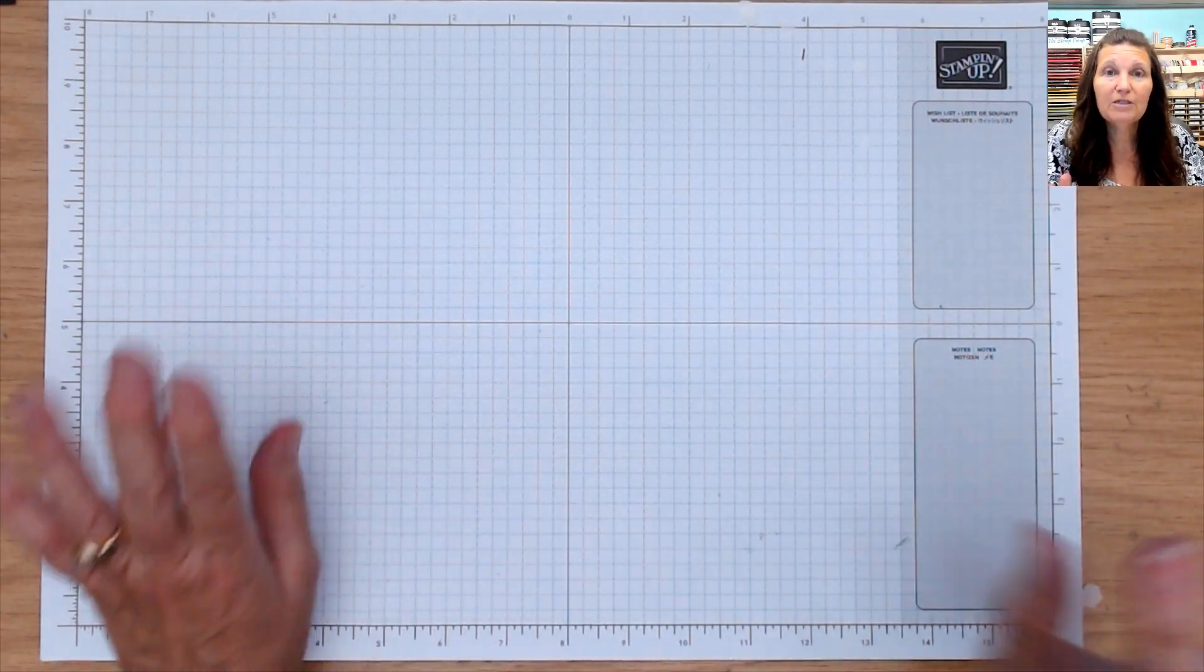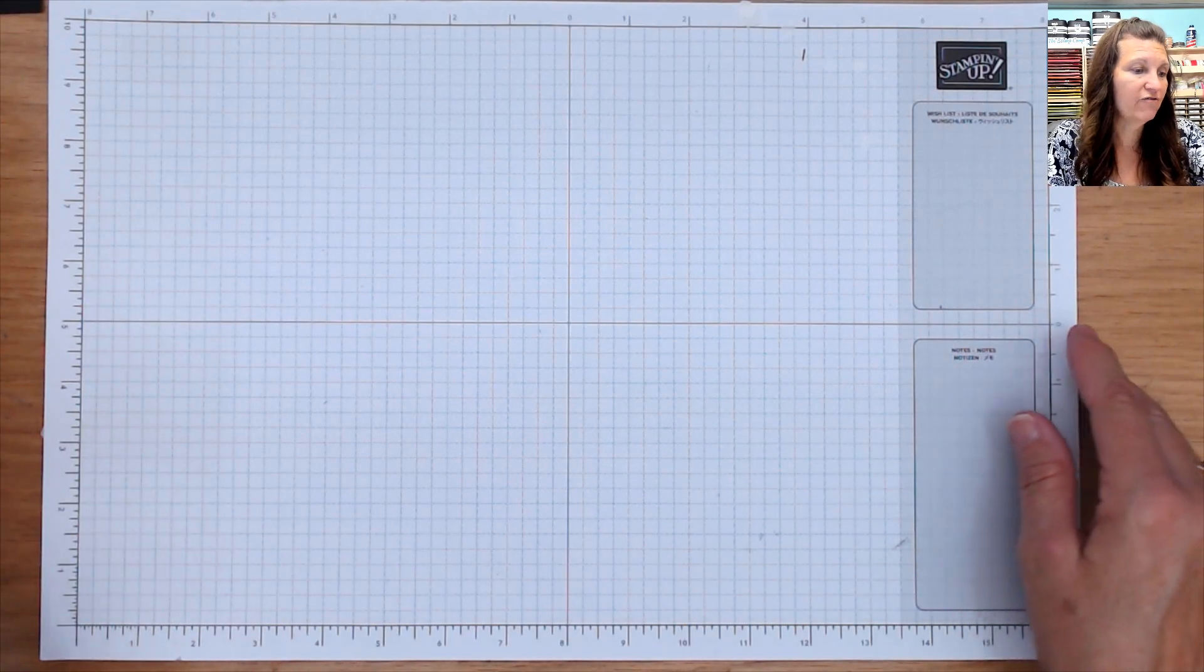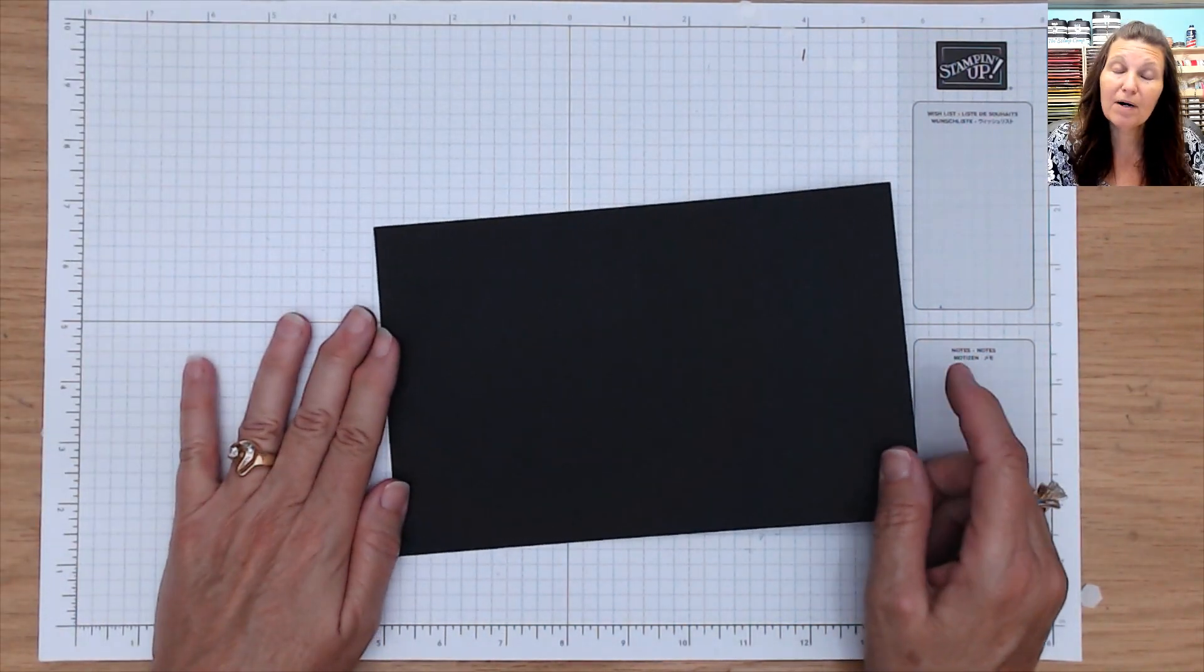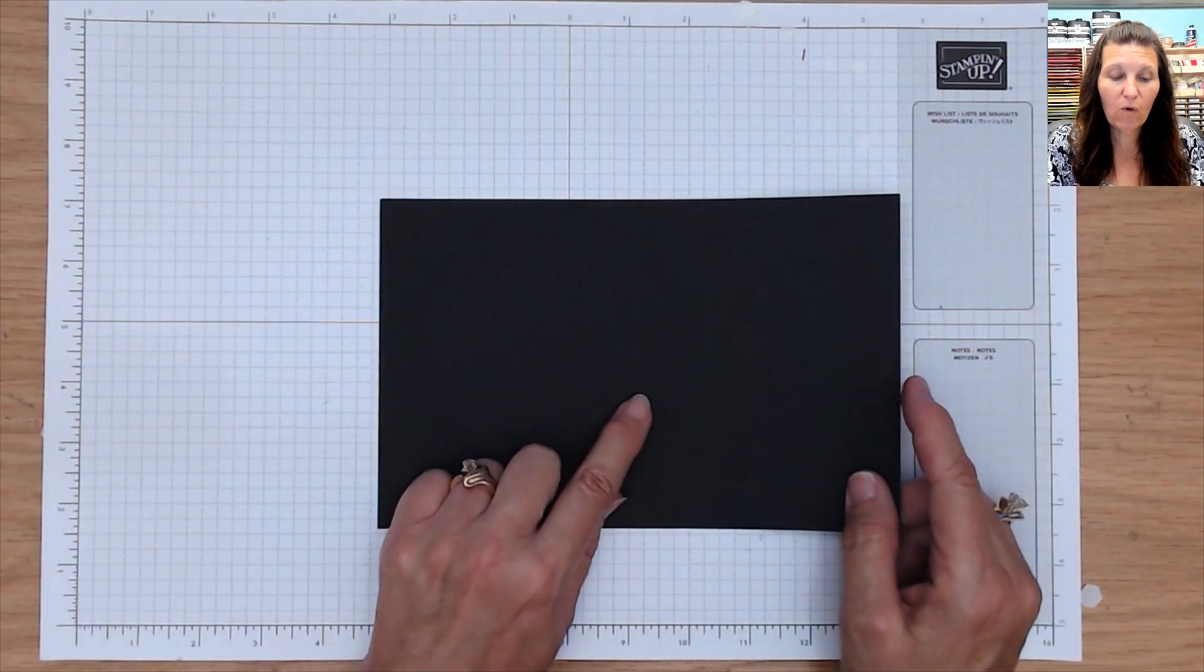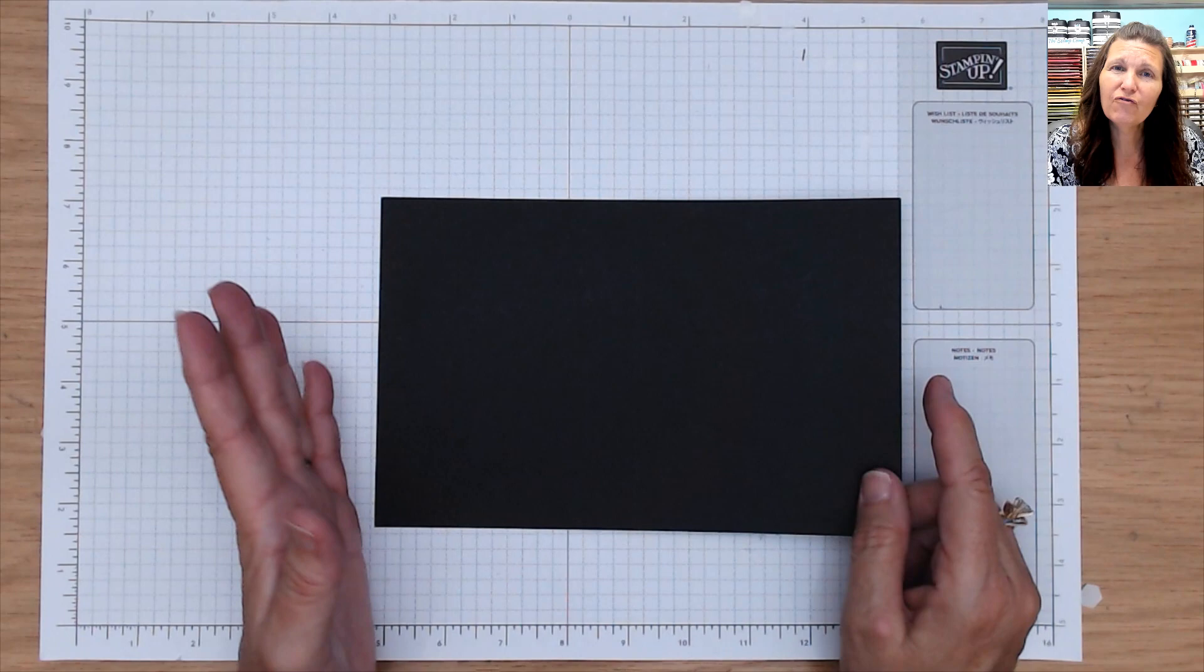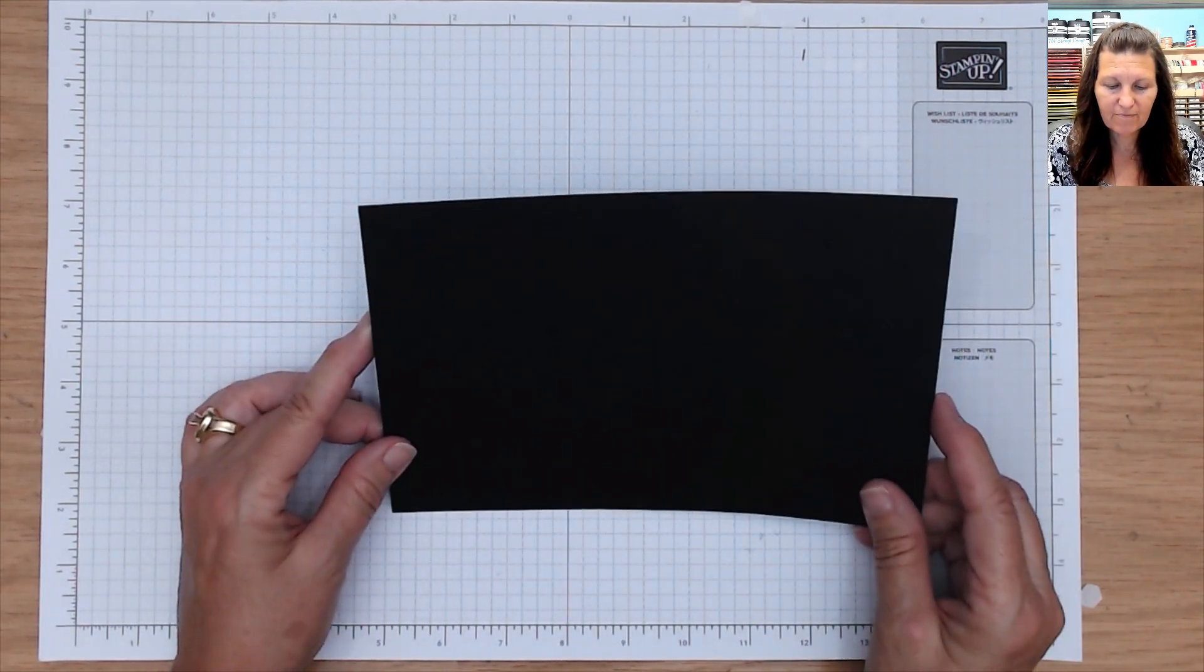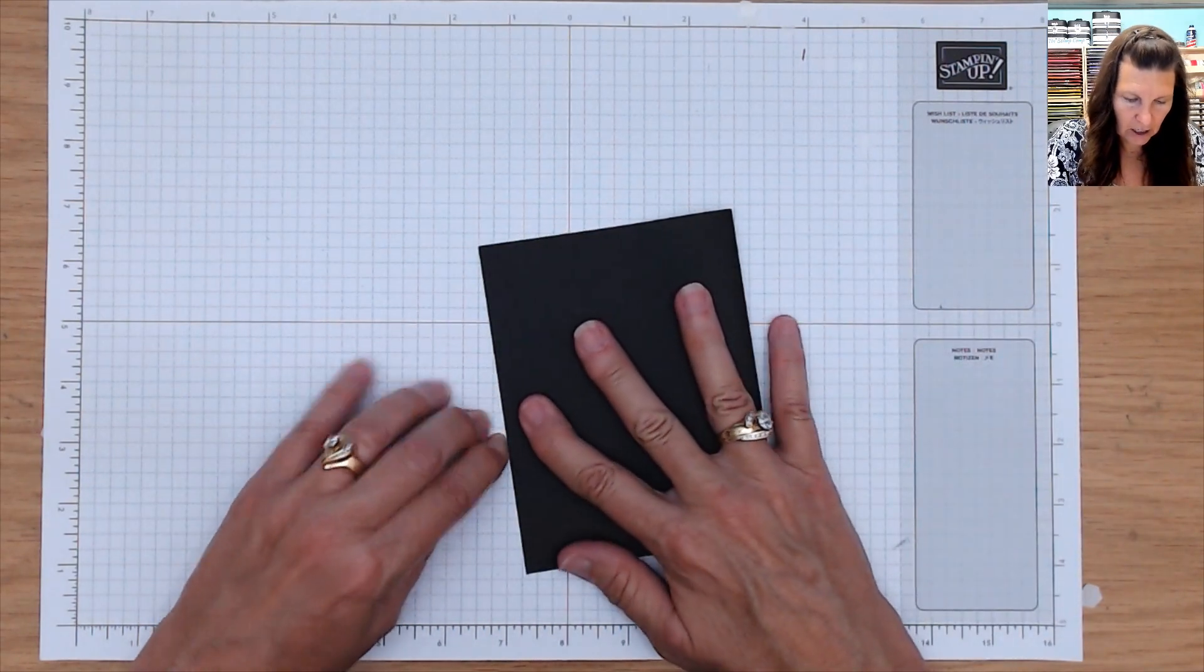Alright, so I'm going to show you the typical, usual way of doing it first. I call this a pop-out, pop-up, pop-out card. A little bit different. We're going to start out with doing the vertical. This is 5 1/2 by 8 1/2, scored at 5 1/4. So your typical card. I'm going to score that.